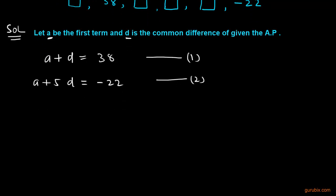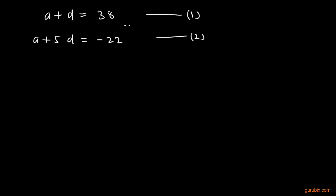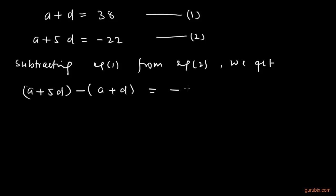Now we shall find out the value of a and d by solving these two equations. We shall subtract equation number 1 from equation 2. Subtracting equation 1 from equation 2, we get a plus 5d minus a plus d, both in brackets, and we will subtract 38 from minus 22.